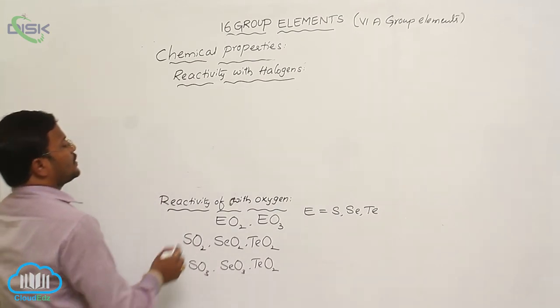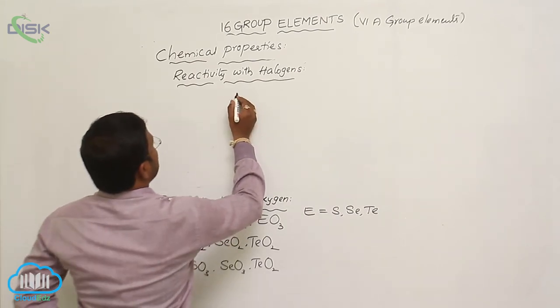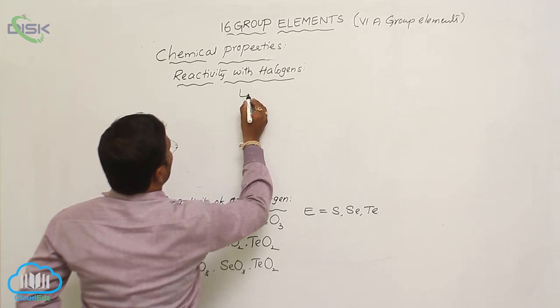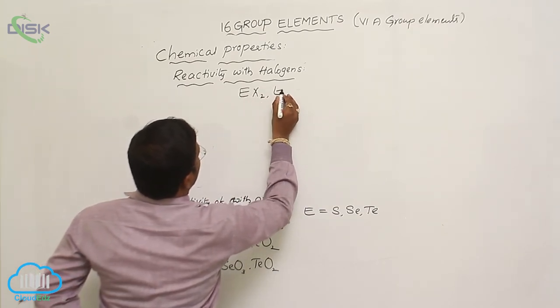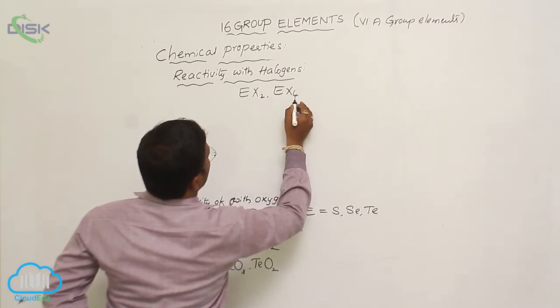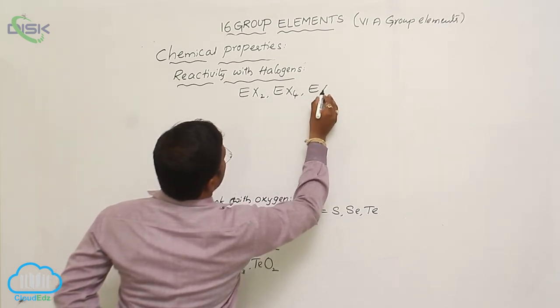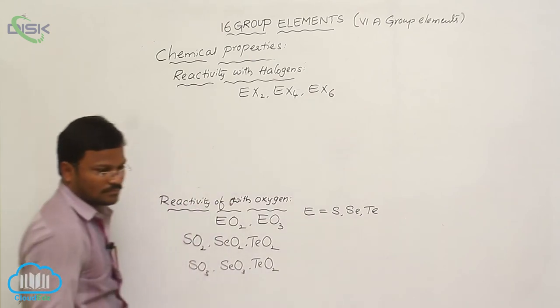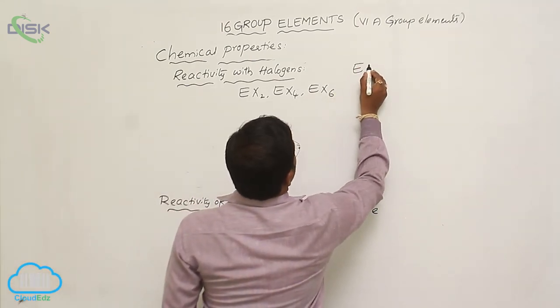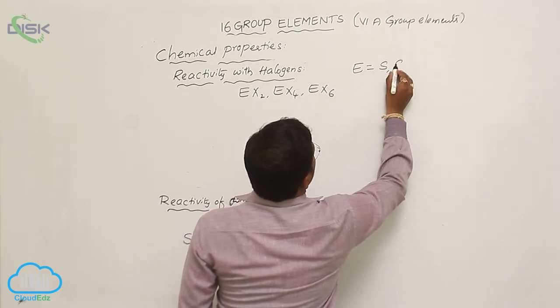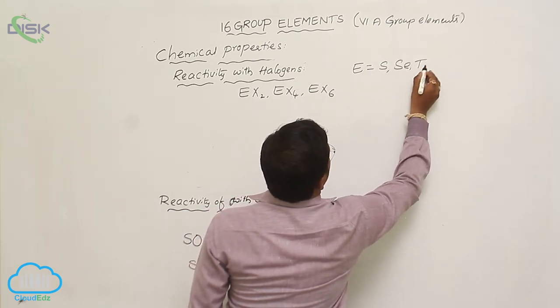The most important type of halogens resulting from 16th group elements are EX2, EX4, EX6, where E is equals to sulfur, selenium, tellurium.